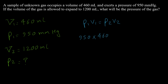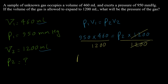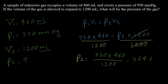We double-check that the volume units are the same — both are in milliliters. p2 is unknown and v2 is 1200 mL. Dividing both sides by 1200, p2 = (950 × 460) / 1200, which equals 364.2. The unit for our answer is the same as the initial pressure unit: millimeters of mercury.